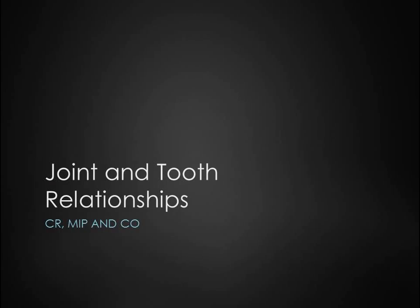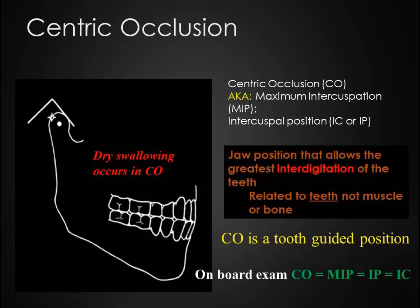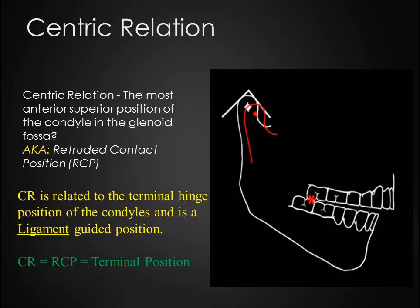Let's discuss CR, MIP, and CO. CO, or centric occlusion, is one of those terms that has been redefined; however, it is commonly used interchangeably with MIP, Maximum Intercuspal Position. The definition of MIP is the complete intercuspation of the opposing teeth independent of condylar position — it's the jaw position that allows the greatest interdigitation of the teeth, which is what you would see with hand-articulated casts. This position is related to the teeth, not the muscle or the bone, so it is a tooth-guided position. Keep in mind that dry swallowing occurs in CO, and on board exams CO equals MIP equals IP and equals IC.